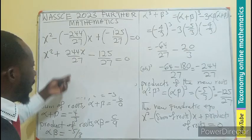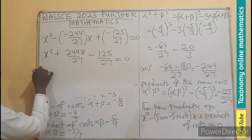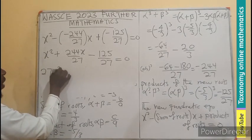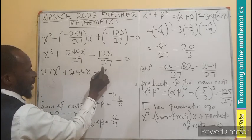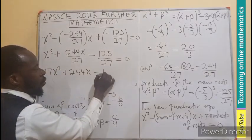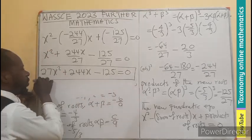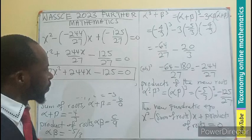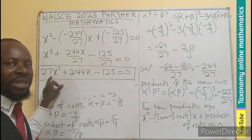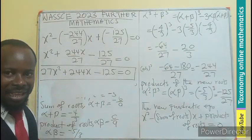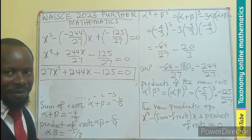And this also involves fraction. So let's use the LCM, 27, to multiply each of the terms. So if you multiply here by 27, you have 27x² plus this will cancel to give you 244x minus 27 times this will cancel, 125 equals to 0. Because 0 times 27 will still give you 0. So this becomes the quadratic equation of α³ and β³. I believe the concept is clear. If that is true, like, follow, share, and comment. Bye-bye.